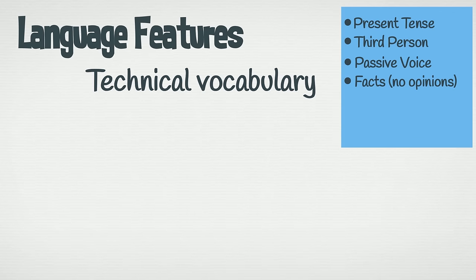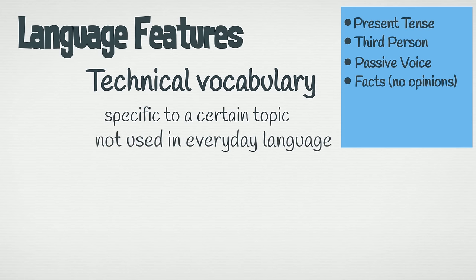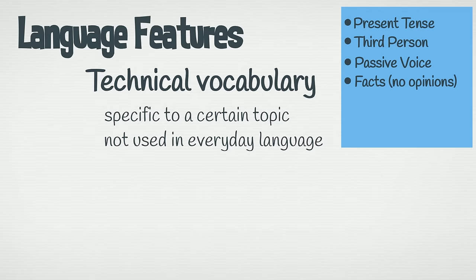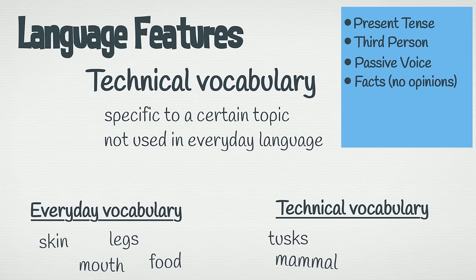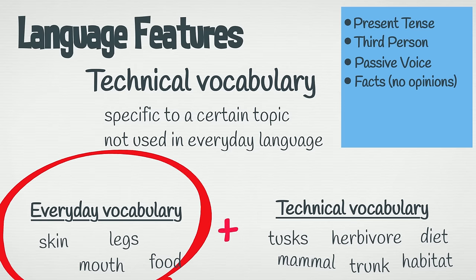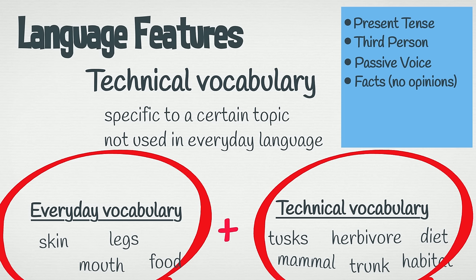Technical vocabulary. These are words that are specific to a certain topic or field and are therefore not used in our everyday language. Staying on the topic of elephants, some everyday vocabulary might include skin, mouth, legs, food. Now here is some technical vocabulary that could be used: tusks, mammal, herbivore, trunk, habitat, diet. An information report will use everyday language, but it also must include technical vocabulary, as it allows the author to communicate with greater clarity and accuracy.